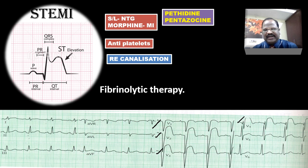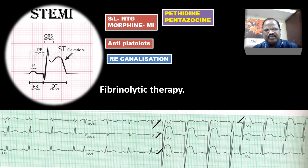Thrombolytic agents activate plasminogen (profibrinolysin) into plasmin (fibrinolysin), thereby lysing the clot. These drugs should be started as early as possible — especially within half an hour, maximum within one hour after onset of MI. If started within this window, the benefit will be excellent.